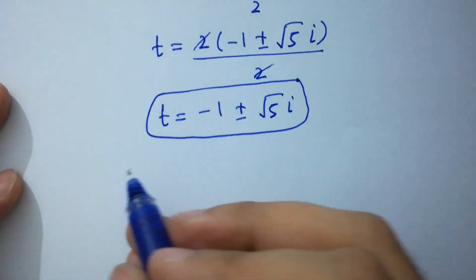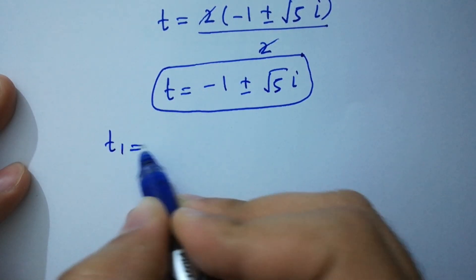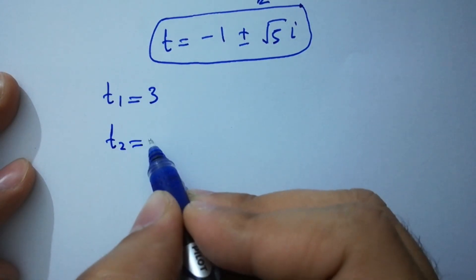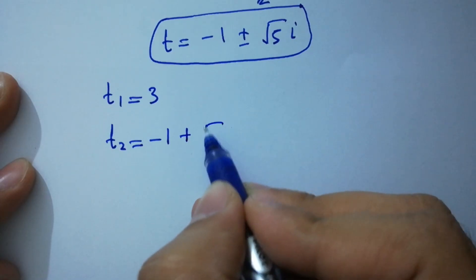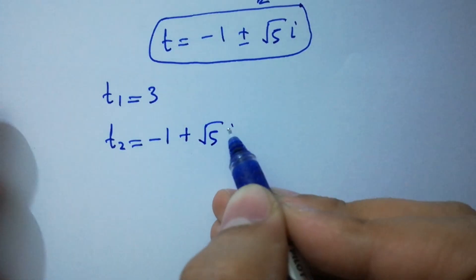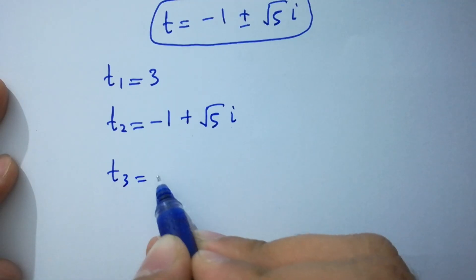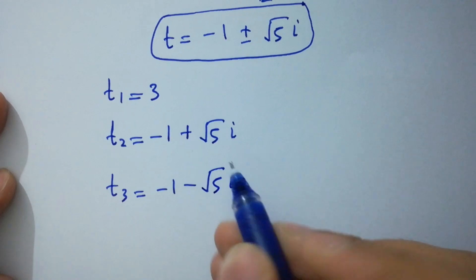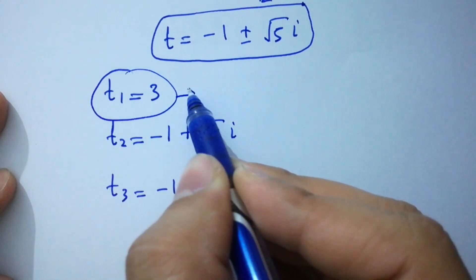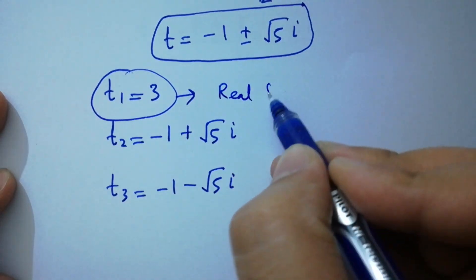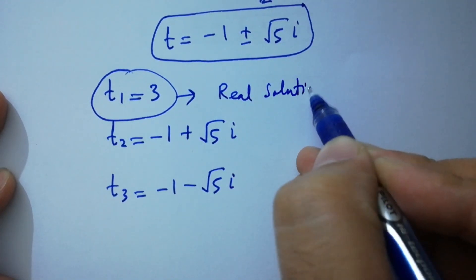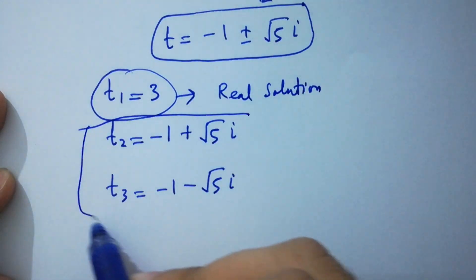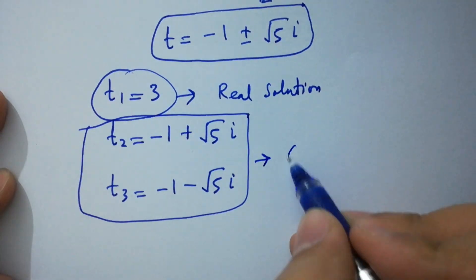So we have t₁ equal to 3, t₂ equal to minus 1 plus square root of 5 i, and t₃ equal to minus 1 minus square root of 5 i. Here t₁ equal to 3 is the real solution, and t₂ and t₃ are complex solutions.